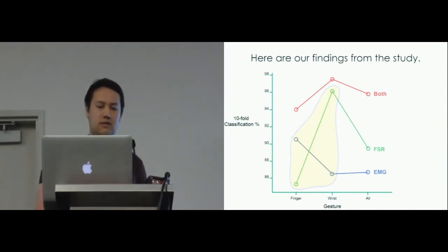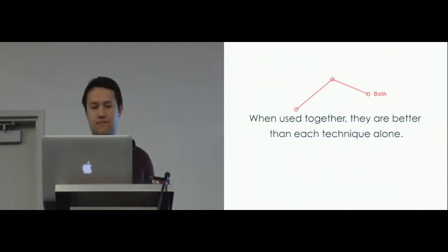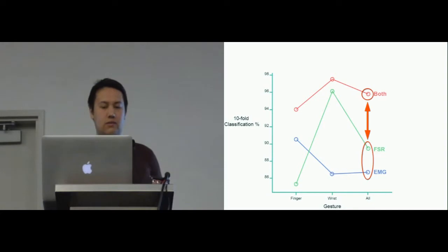We saw the opposite for wrist gestures, with pressure sensors having an advantage of around 10% over EMG. We used a two-way repeated measures ANOVA and found that statistically, there is a significant complementarity between these two sensor types and for these two gesture sets. That is to say, finger gestures can be classified better by EMG, and wrist gestures can be classified better by pressure sensors. When they're used together, they are better than when each technique is used alone, and this is particularly true when we're classifying the entire gesture set, which includes the finger gestures and the wrist gestures.